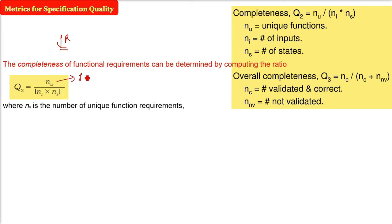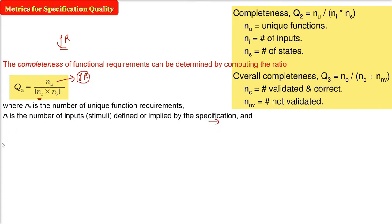nu is the number of unique function requirements. All the function requirements, no duplication, unique function requirements should be there. It should not match with others. ni is the number of inputs defined and implied by the specification. In the specification of function or how many inputs it is going to take. So, these are the inputs ni. ns is how many states it will change. So, number of states specified for this function. You can see it in the state diagram also.